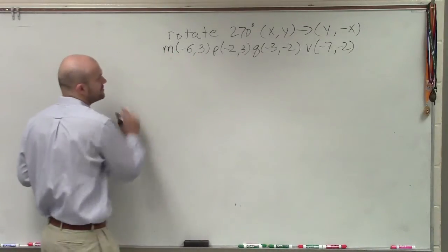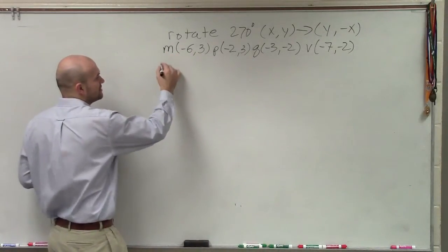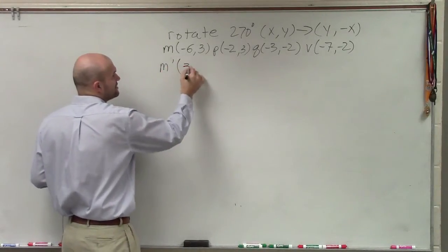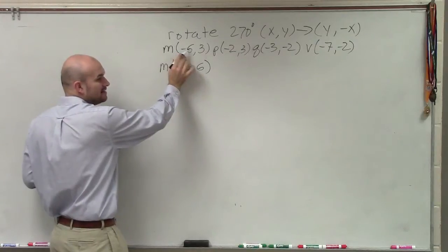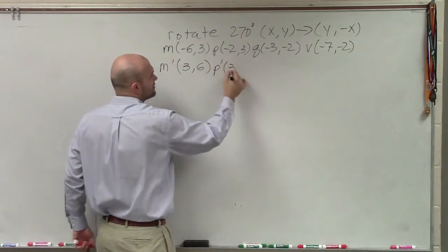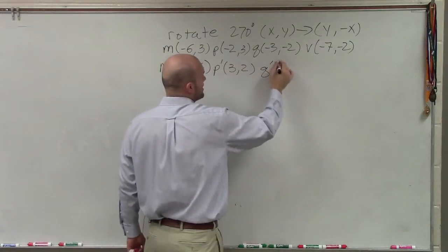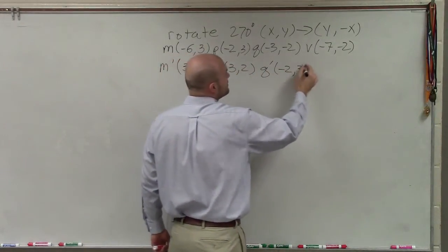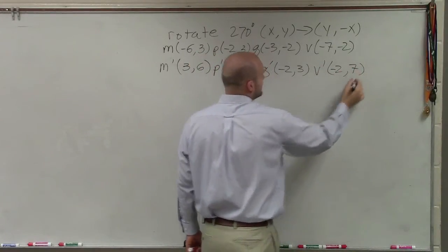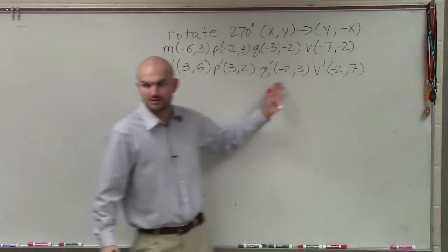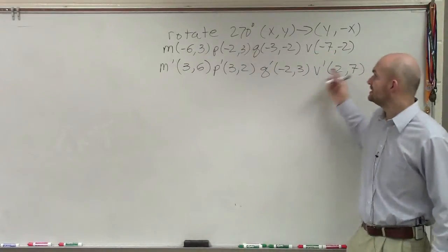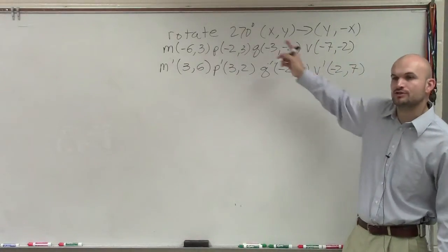So what I'm going to do then is let's just apply that transformation to each one of these. So now my new points, which we label as m-prime, is going to be 3, 6 because now I negate the old x-coordinate. p-prime is now going to be 3, 2. q-prime is going to be negative 2, 3. And v-prime is now going to be negative 2, 7. Do you guys see how I swapped each one of the variables? And then the second term, which is our new y-coordinate, is the opposite sign of what it originally was.